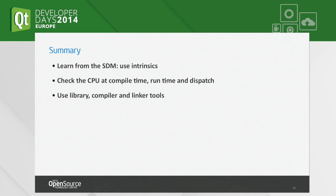To summarize: learn from the Intel SDM manual, use the intrinsic. Check CPU support at compile time, runtime, and dispatch. Use what your compiler does for you when writing a library. Always benchmark — don't waste time optimizing stuff that doesn't give you much benefit, but also benchmark after you've done it to verify that you did get a benefit at all.